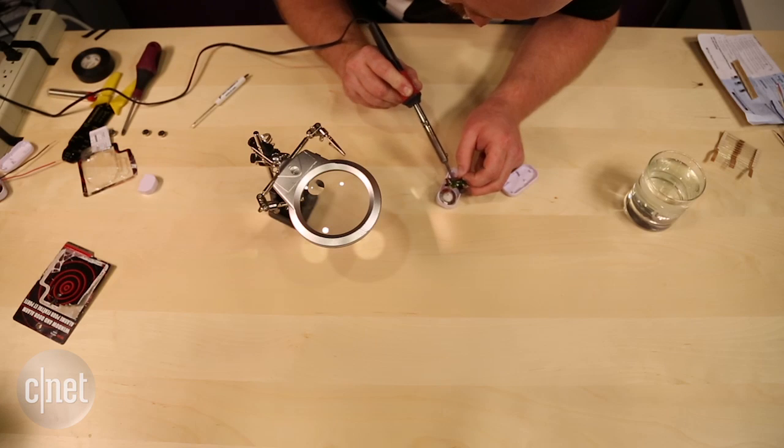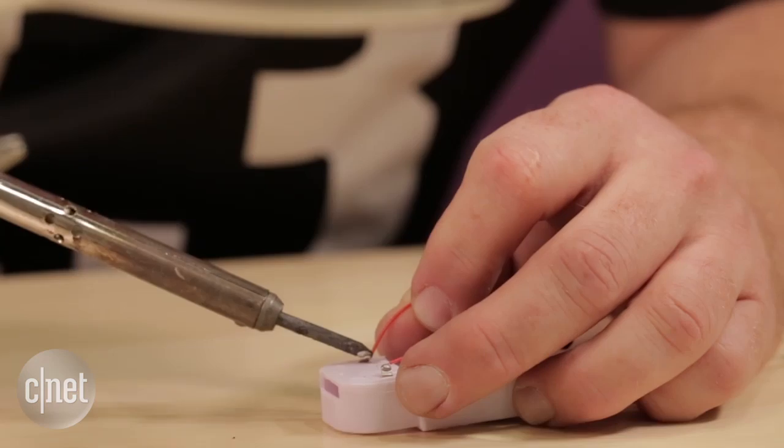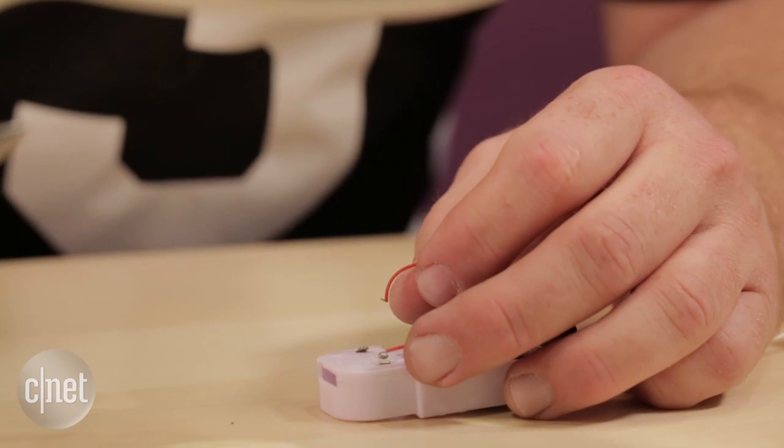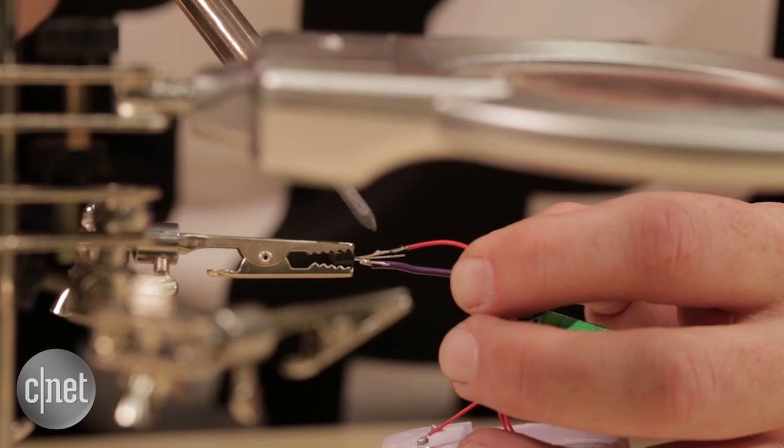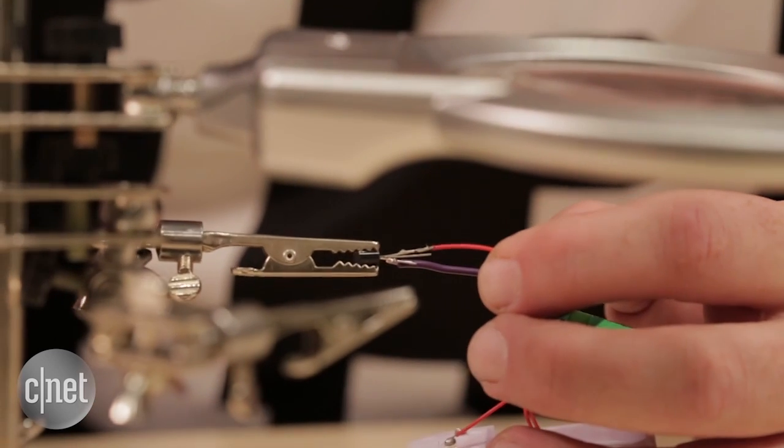The second step will be disconnecting the wire that is currently connected to the negative battery terminal. Then you'll connect that wire that you just removed from the negative terminal to the drain terminal on the MOSFET.